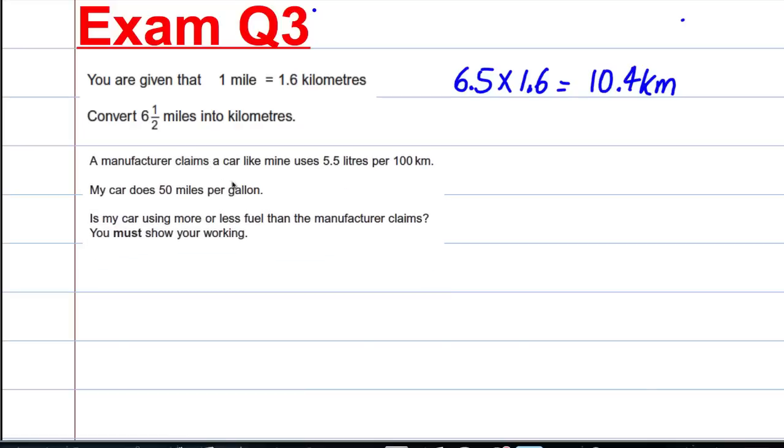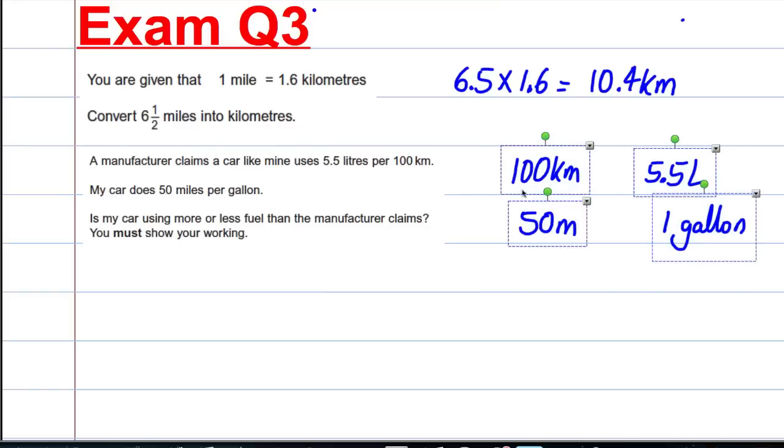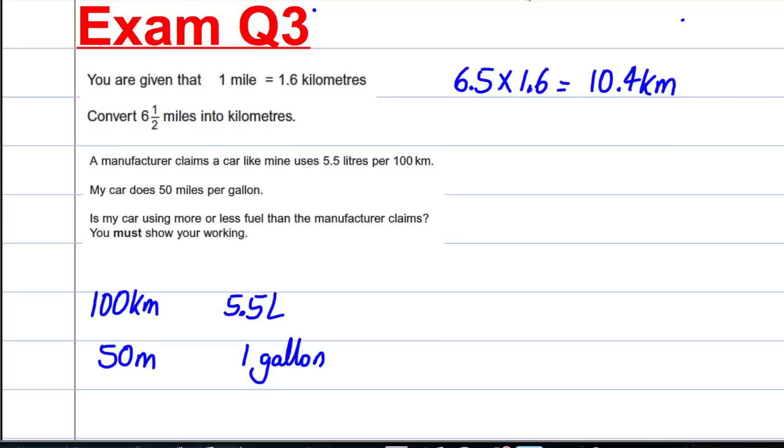Let's move on to the difficult bit here. A manufacturer claims he uses 5.5 litres per 100 kilometres. That means if he travels 100 kilometres, he uses 5.5 litres. And then my car does 50 miles for every gallon, for one gallon. We're trying to work out, is my car using more or less fuel than the manufacturer claims? To compare these, we've got to compare like with like.